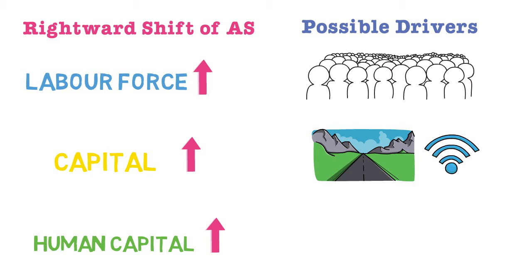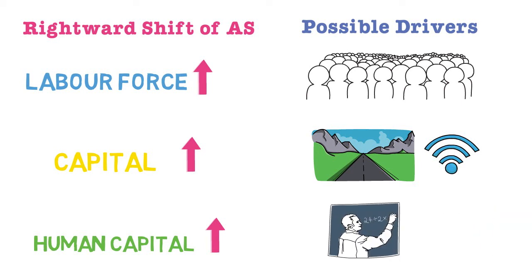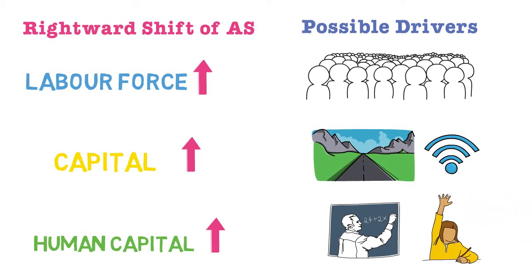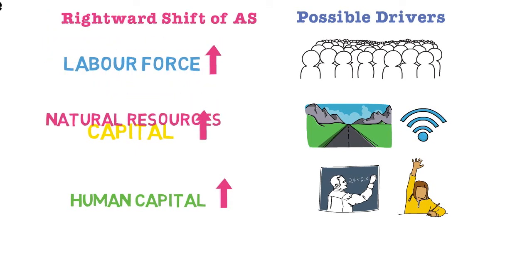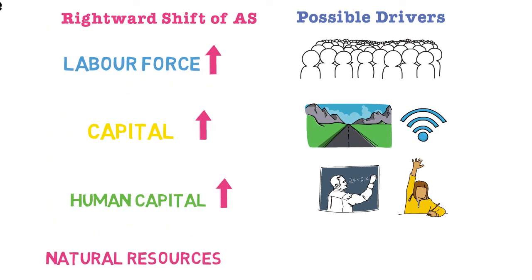We also have human capital: if human capital increases — meaning the skill set and training of the workforce — the aggregate supply curve would shift rightwards. This would happen due to more investment in education, or more training programs specific to sectors where there is work and high productivity. This kind of focused training would increase aggregate supply.